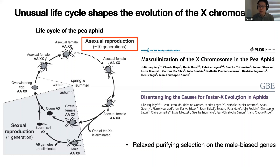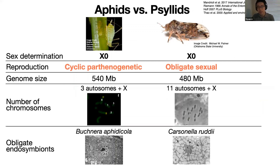However, previous studies are all based on genomes without a chromosome level assembly. In our study, we built chromosome level genome assemblies of the aphid and the closely related species without an asexual phase — the psyllid — to compare them. They both have the XO sex determination system. The aphid is cyclic parthenogenetic, whereas psyllids are obligate sexual. They have similar genome sizes. The aphid has three autosomes and one X chromosome. They both harbor the obligate endosymbiont Buchnera aphidicola and Carsonella ruddii, hosted in specialized cells called bacteriocytes.